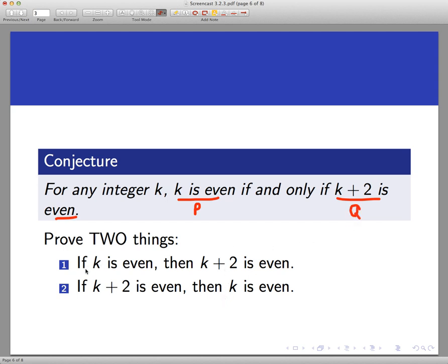First of all, I have to prove that if k is even then k plus 2 is even, and then I need to prove the converse. I have to prove if k plus 2 is even then k is even. Once both of those things have been established, I prove the if and only if statement.